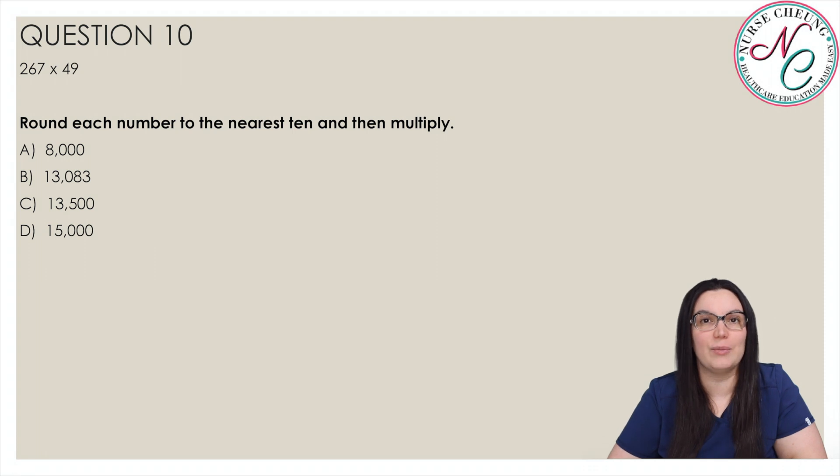267 times 49. Round each number to the nearest tenth and then multiply. Is it A, 8,000, B, 13,083, C, 13,500, D, 15,000? And the correct answer is C, 13,500.